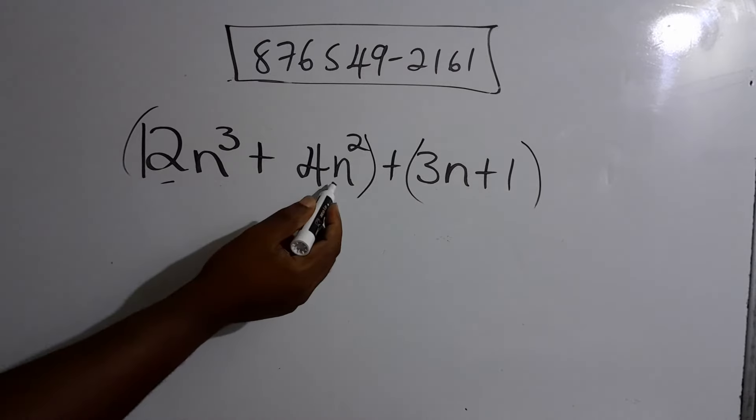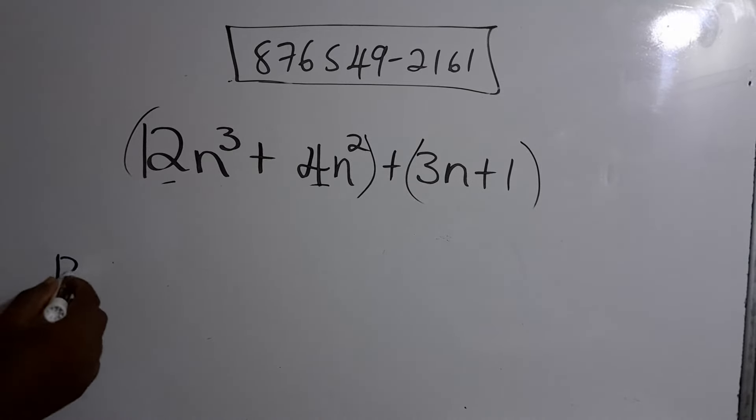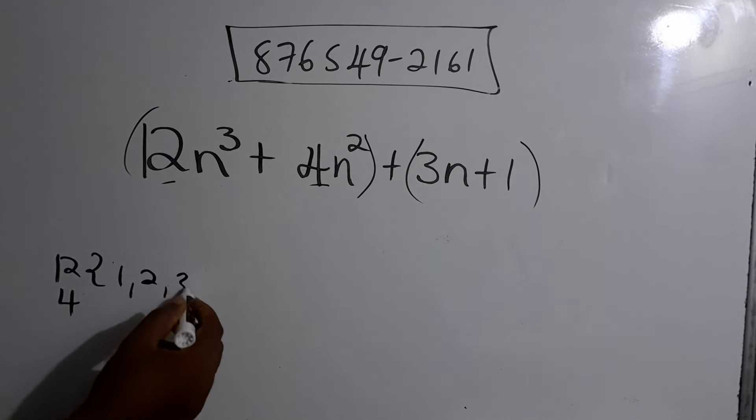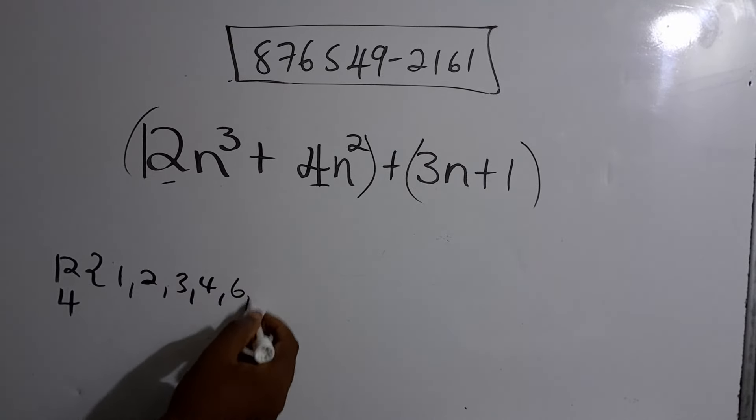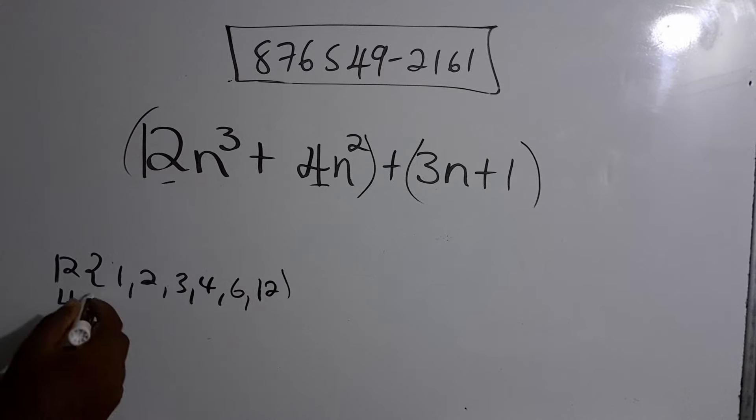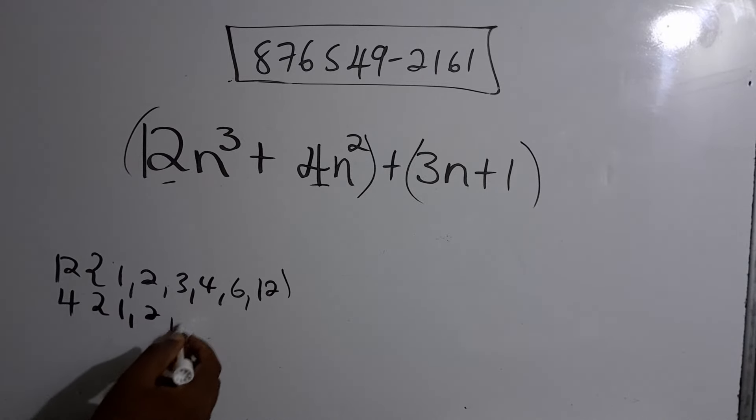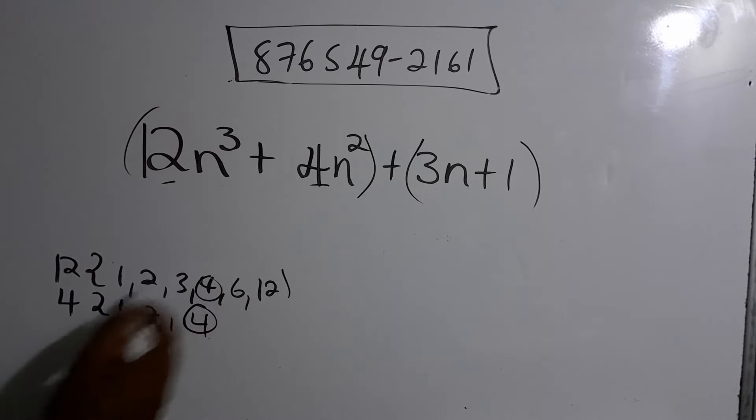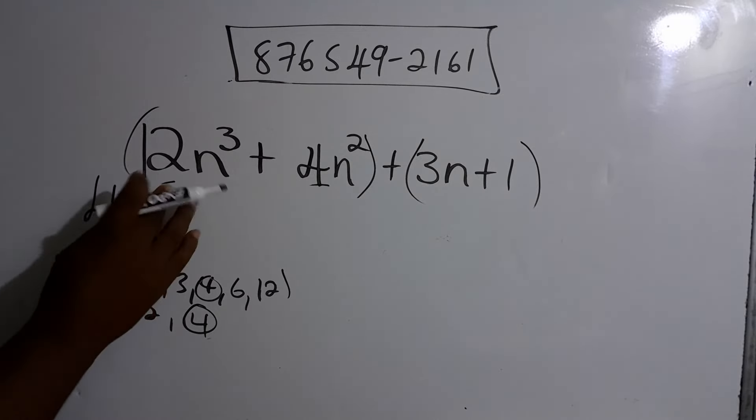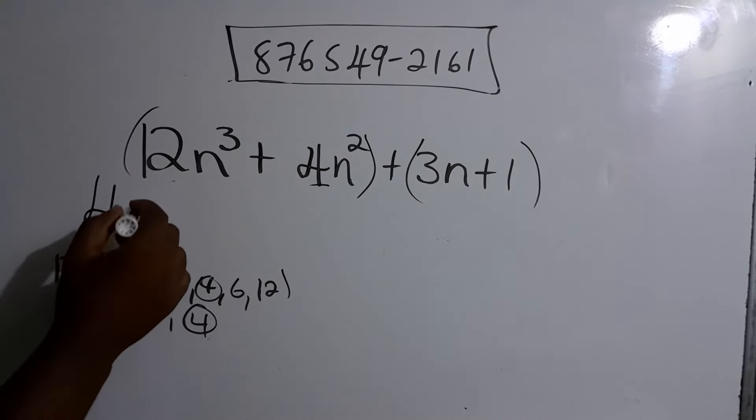What's the highest number that can go into 4 and 12? Of course we list the factors of 12: 1, 2, 3, 4, 6, 12. And we list the factors of 4 which is 1, 2, and 4. So we see that 4 would be the highest common factor. So we take out the 4, n³ and n² that would be n².